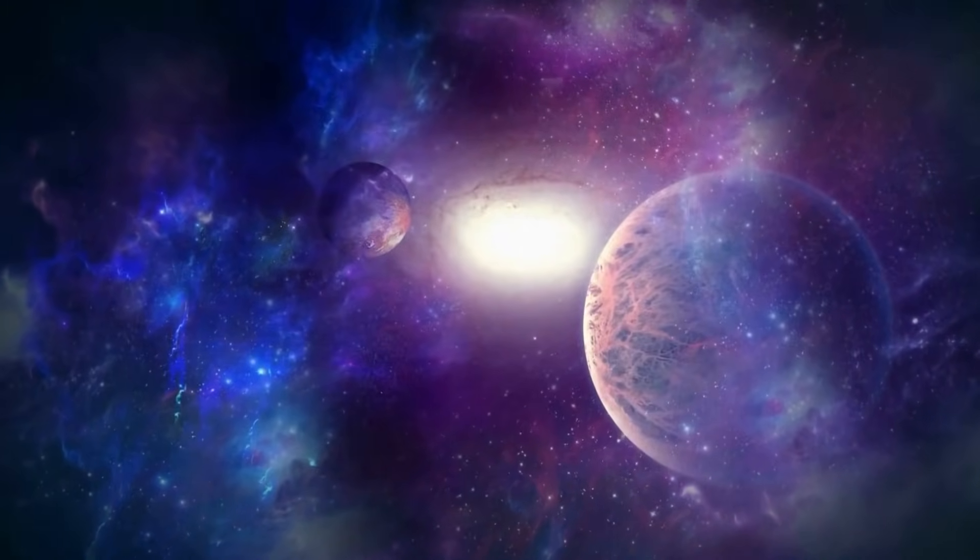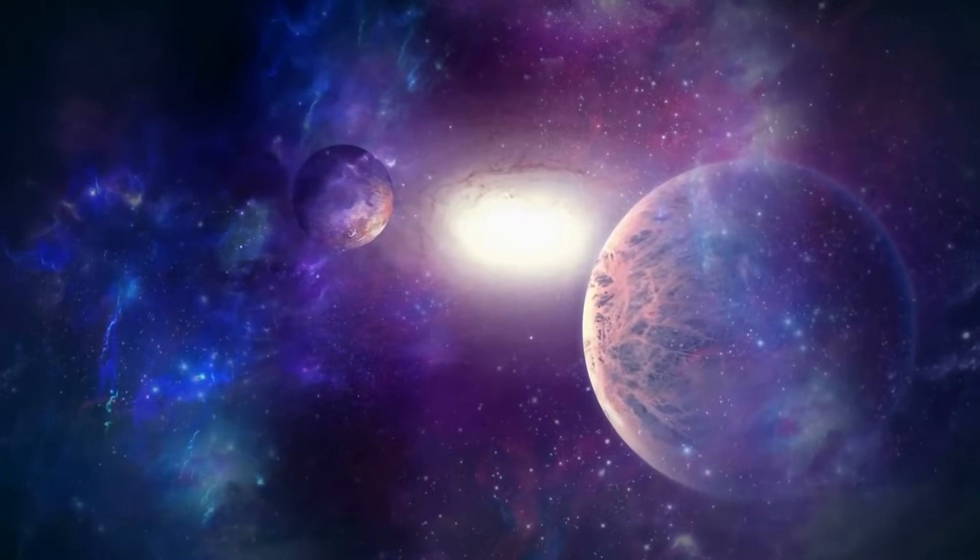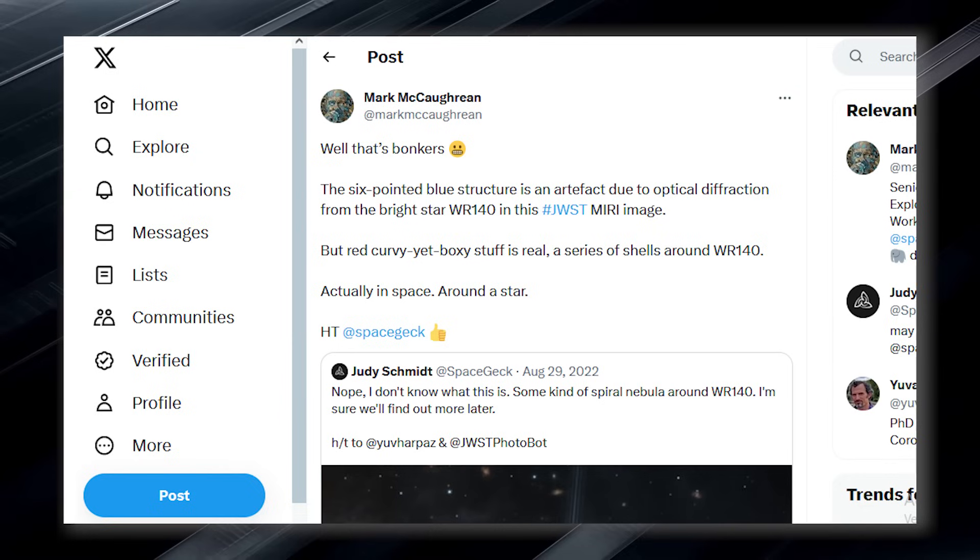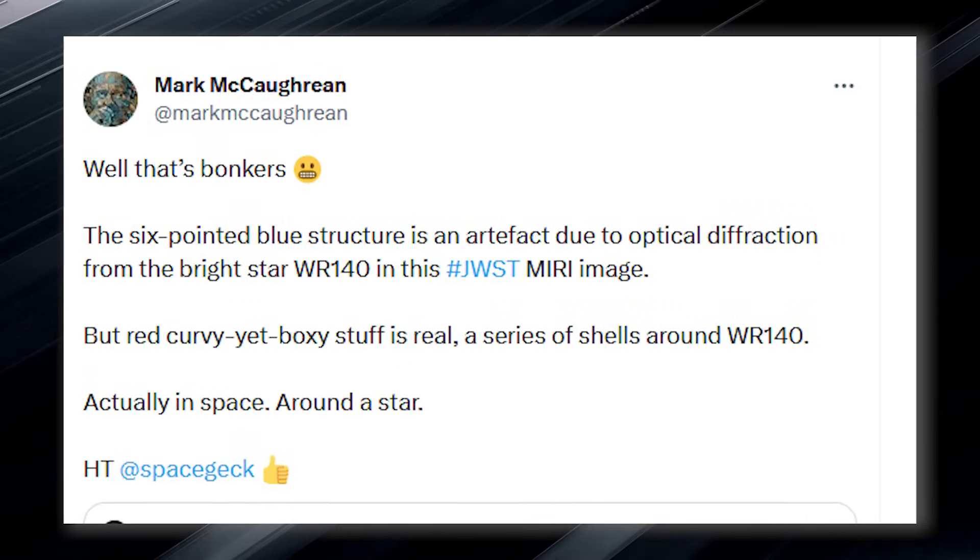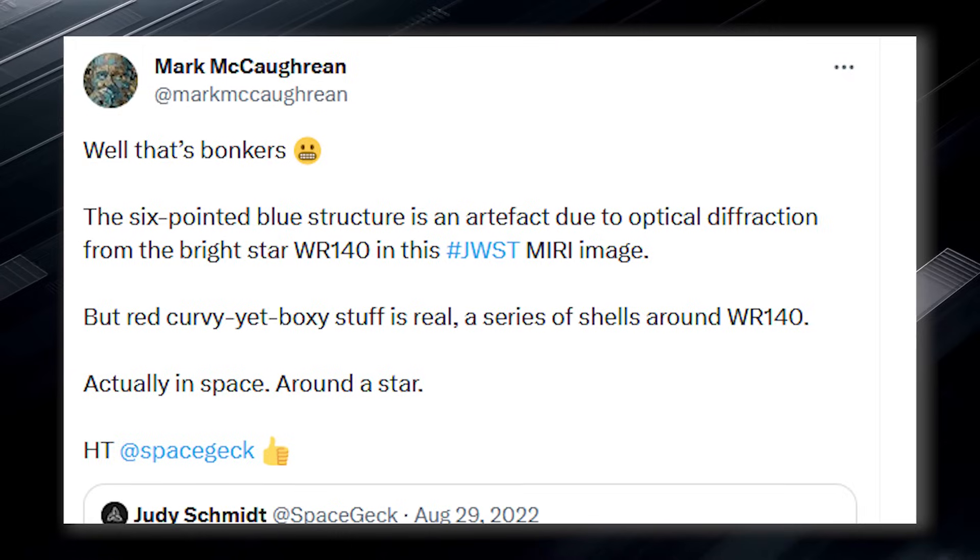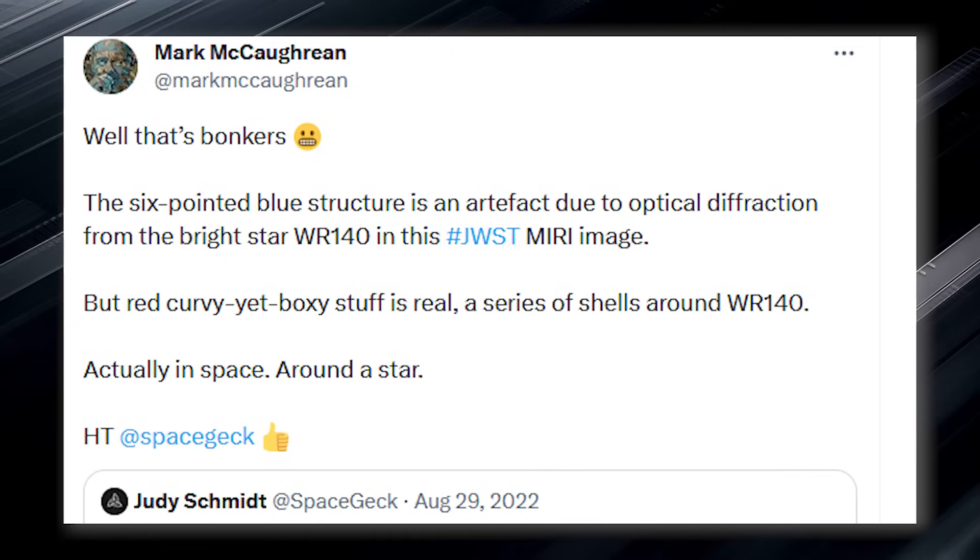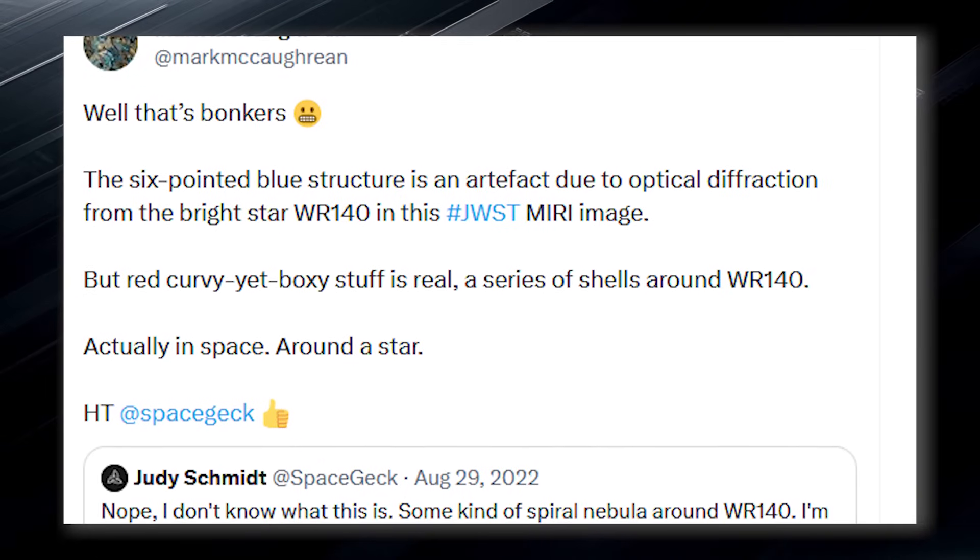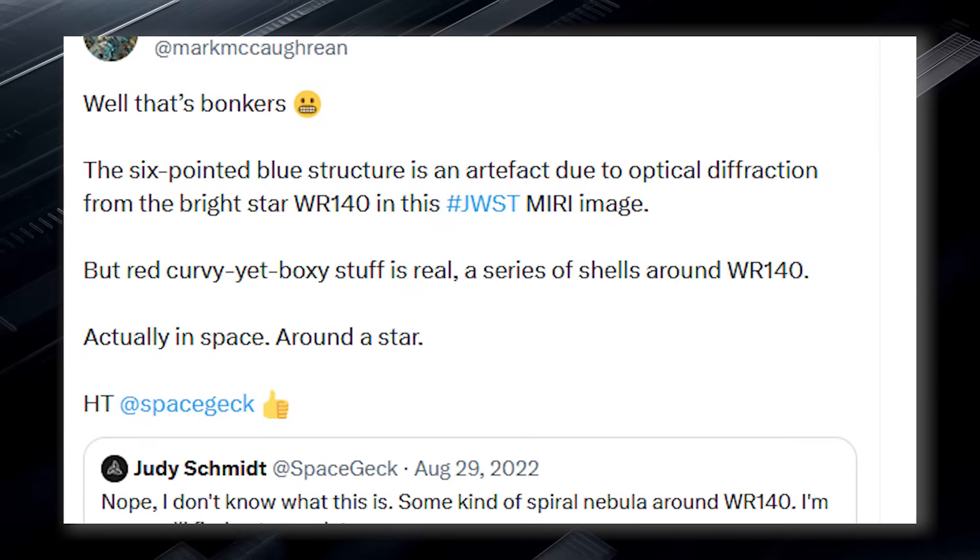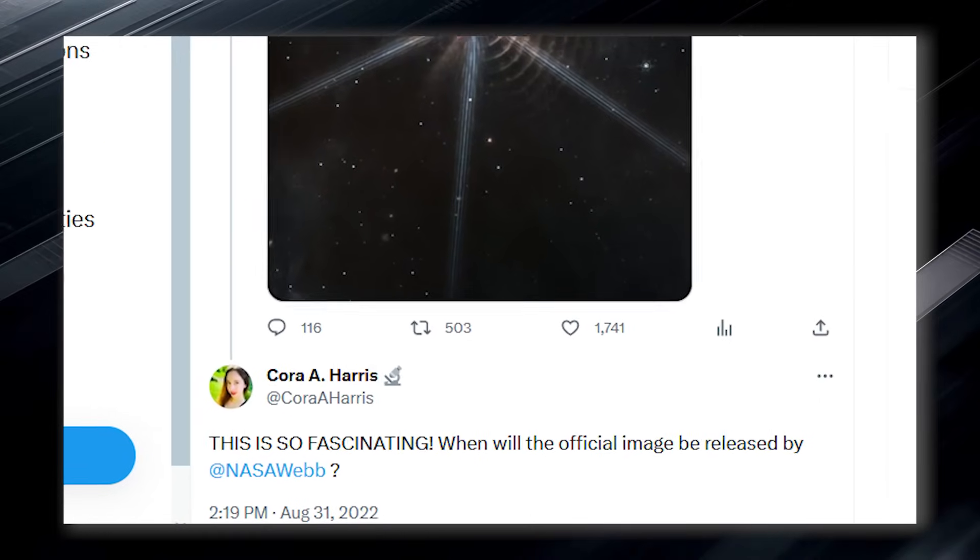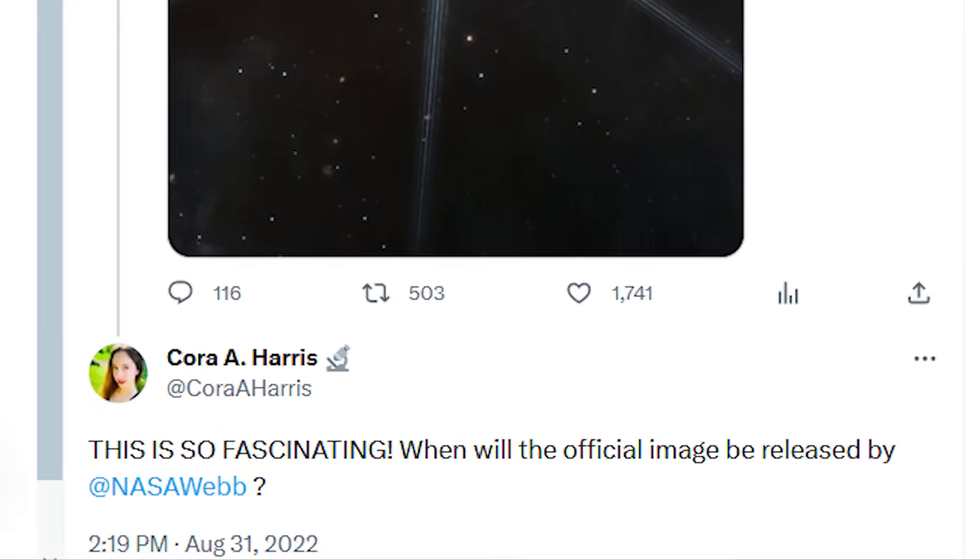Mark, an interdisciplinary scientist with JWST Science Working Group and a science advisor to the European Space Agency, called the feature wacky in a Twitter thread. He explained that the six-pointed blue structure is an artifact due to optical diffraction from the bright star WR 140 in the image. However, he noted that the red curvature is real and represents a series of shells around WR 140 in space. Although NASA is expected to have something to say about this, it is expected to make a statement soon.